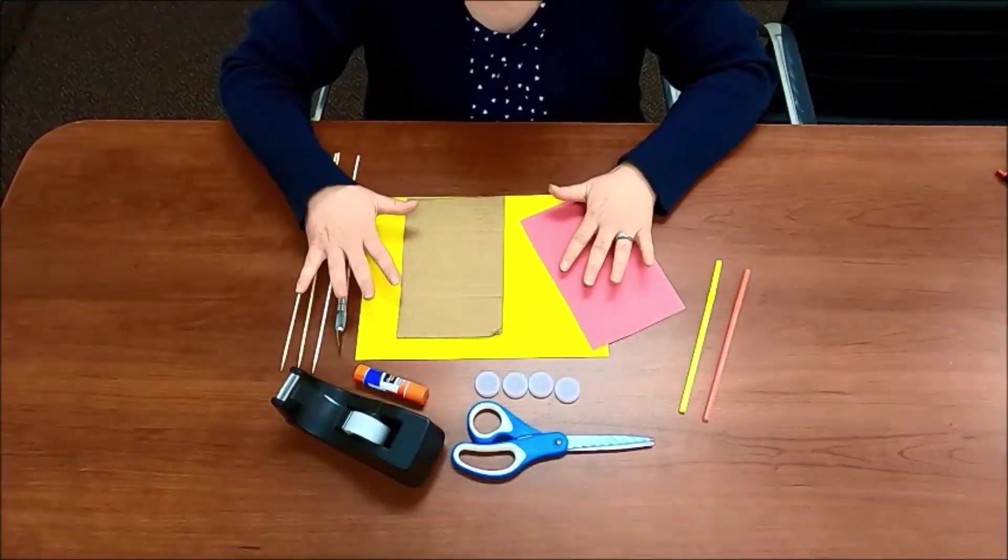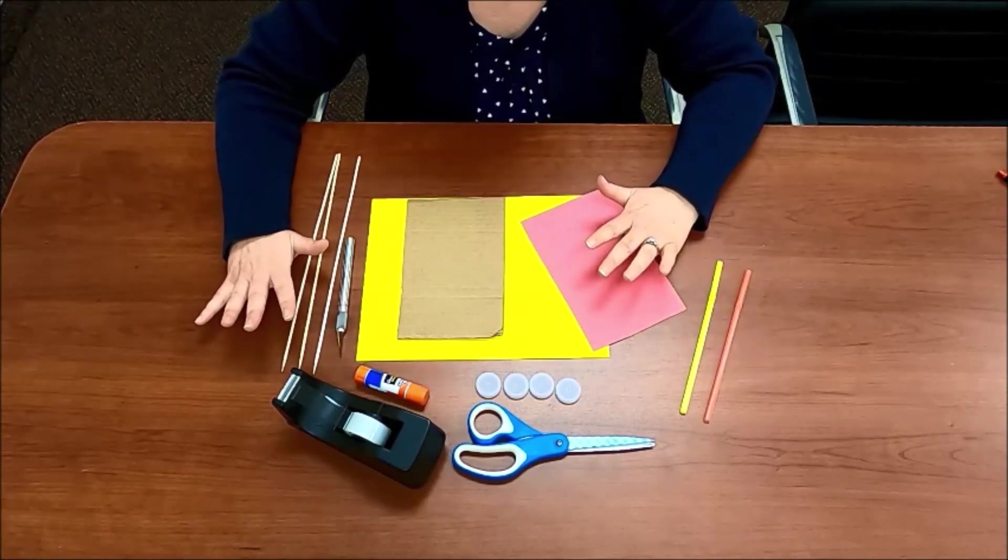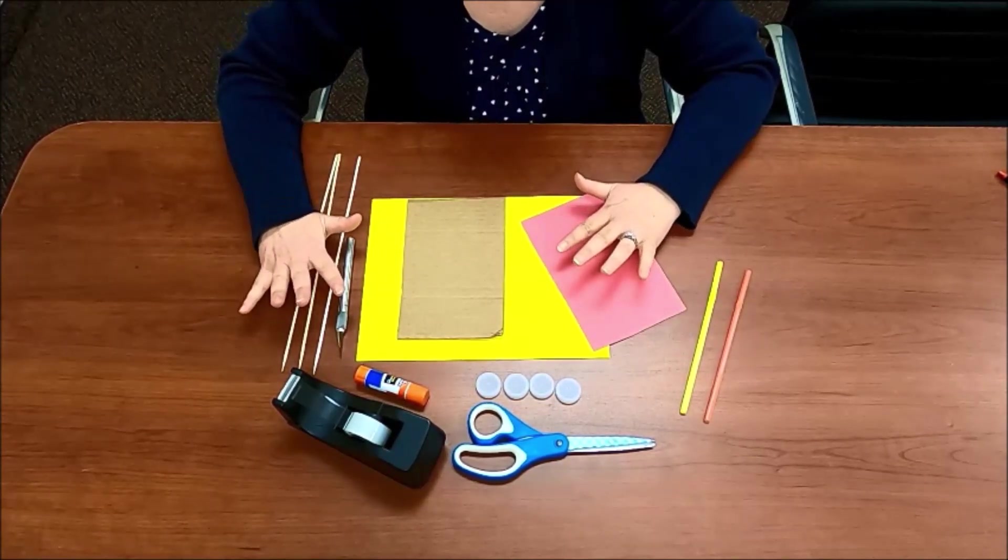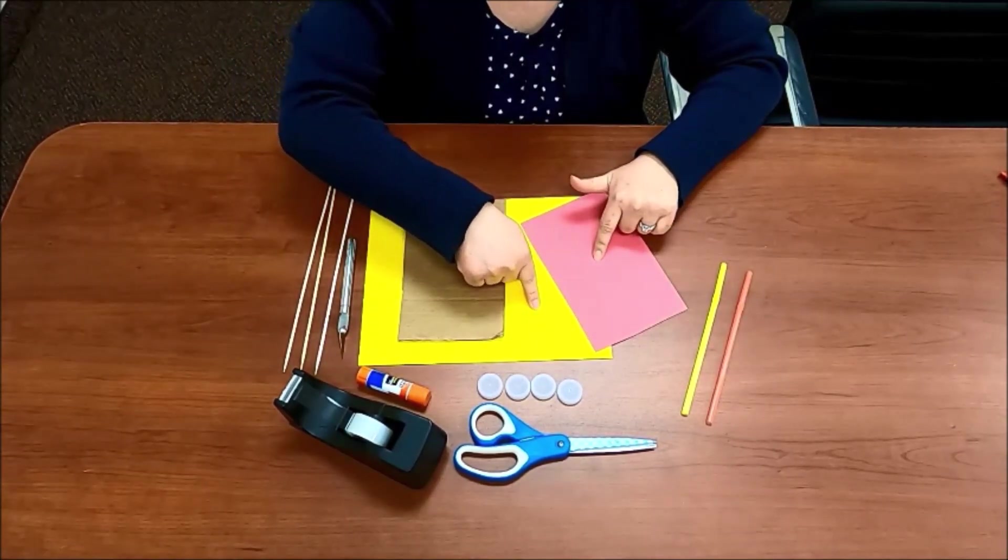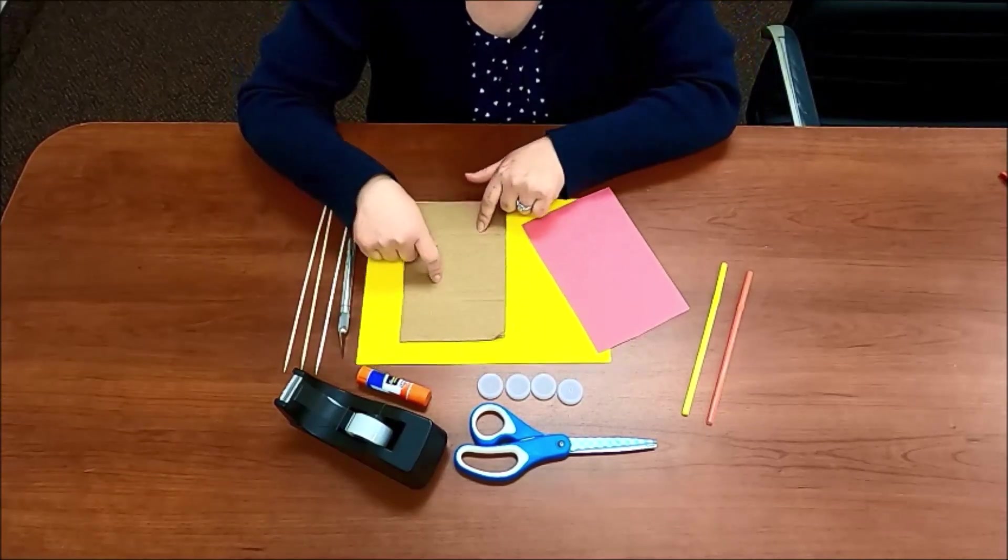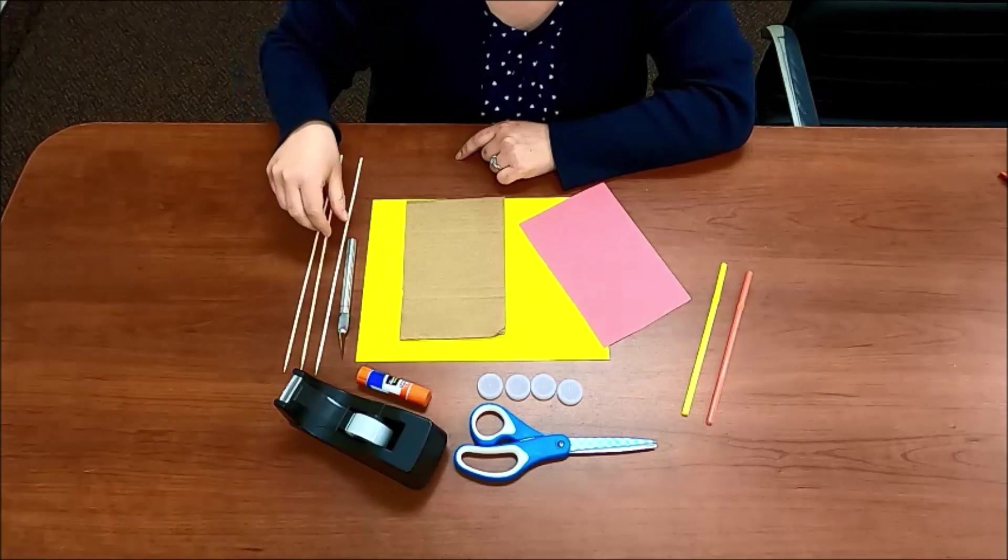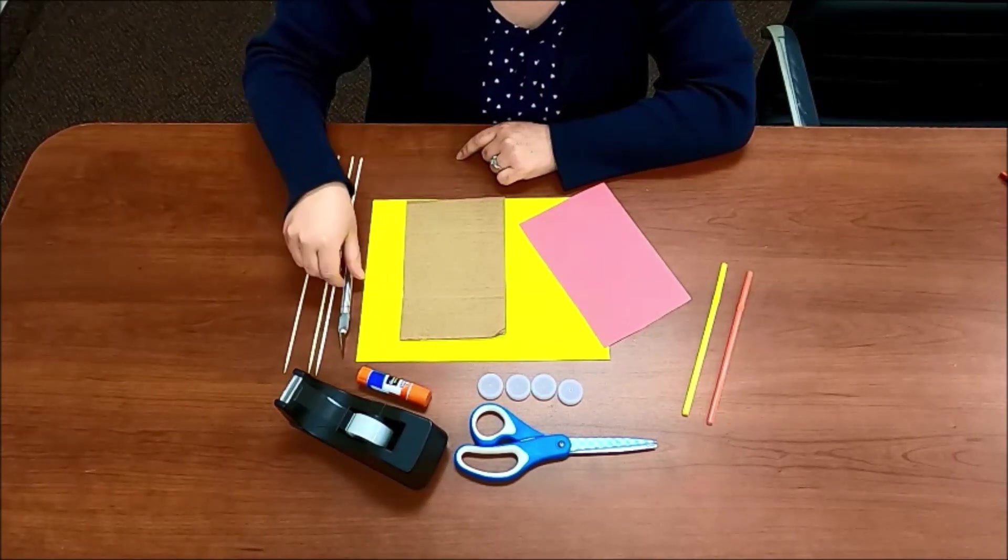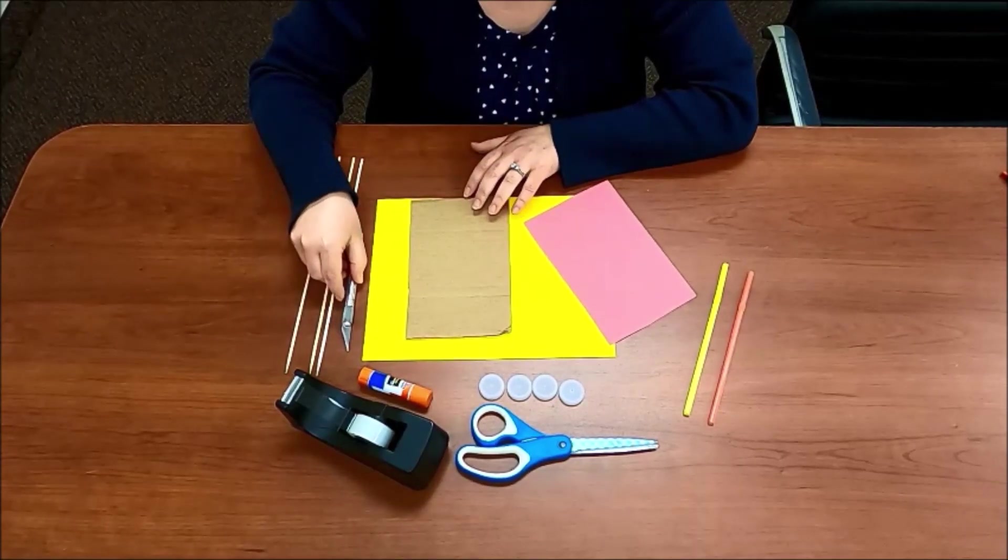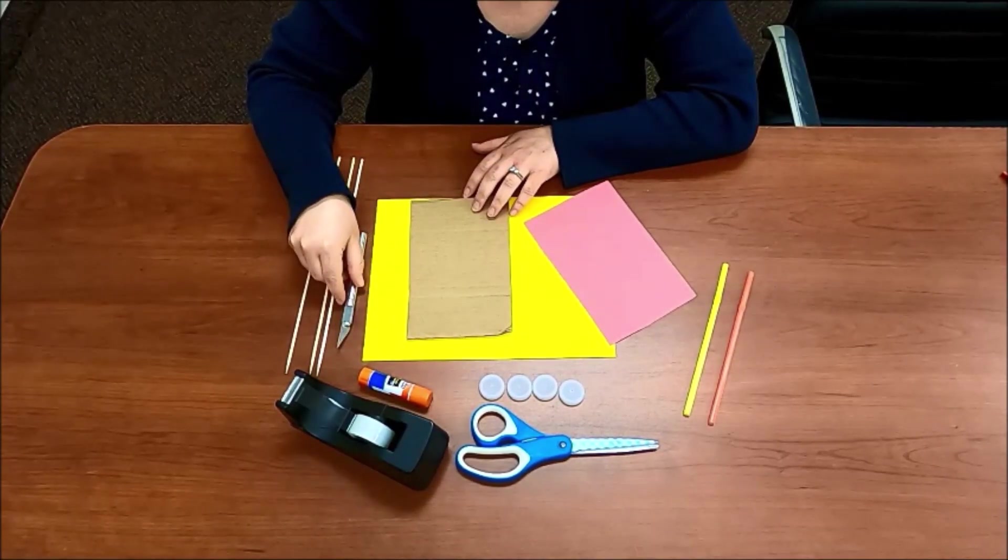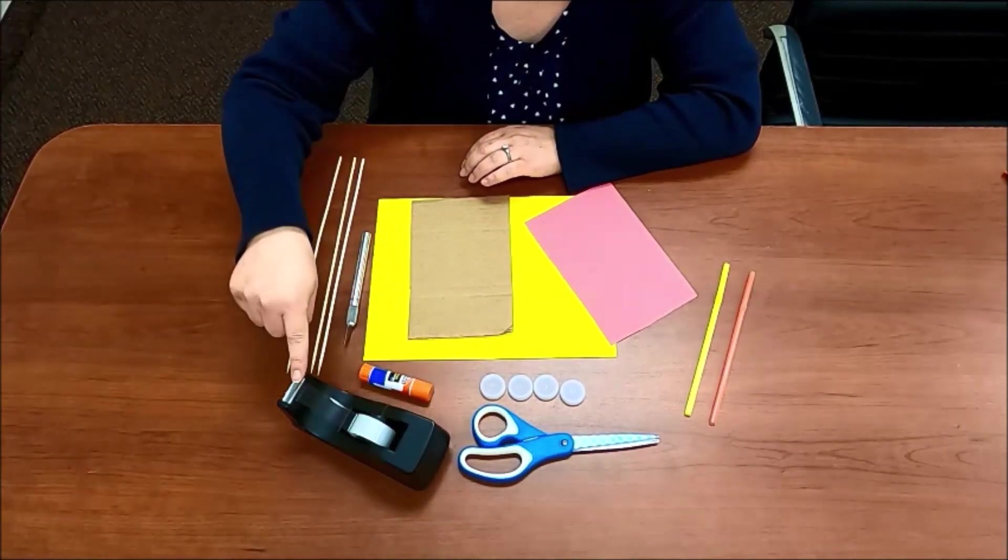The materials that you'll need are hopefully already in your home. If not, you can totally get these at the dollar store. So you'll need two straws, some pieces of construction paper, a piece of cardboard, you'll need four bottle caps, you'll need three skewers, and an exacto knife or a box cutter that has a really sharp blade. You'll need some glue, some scissors, and some tape.